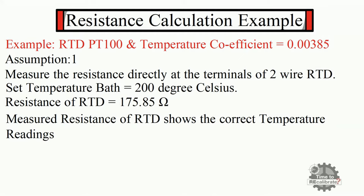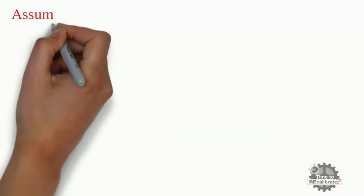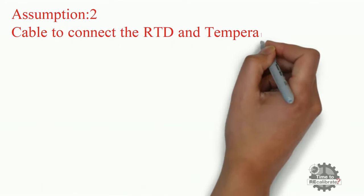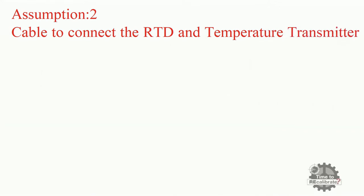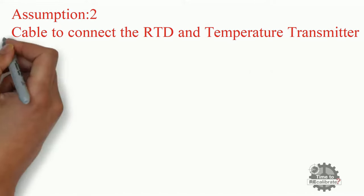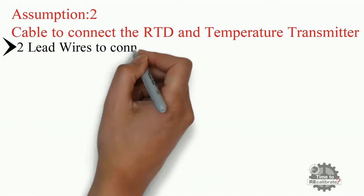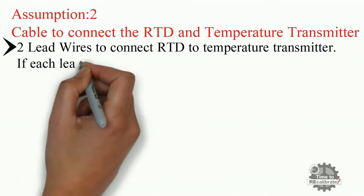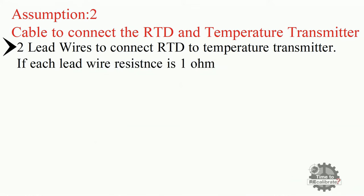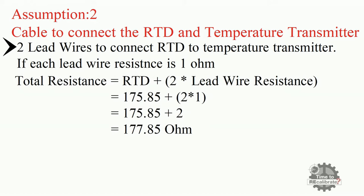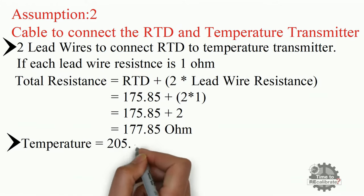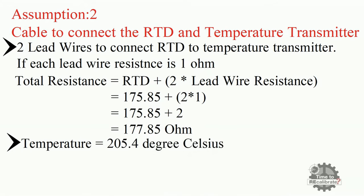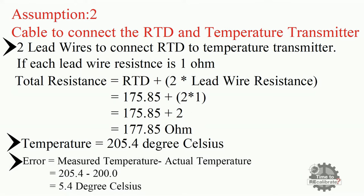Let's take one more example to understand lead wire resistance in detail. In industry applications, we use a cable to connect the RTD to the temperature transmitter. This cable resistance is known as lead wire resistance and will add to the total resistance. For example, if we use two lead wires each with 1 ohm resistance, and put all these values into the equation, we get 177.85 ohms. The temperature according to this total resistance value is 205.4 degrees Celsius, which is incorrect. The error is 5.4 degrees Celsius — the lead resistance introduced a measurement error of 5.4 degrees Celsius.